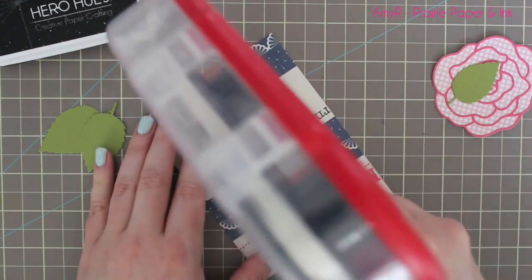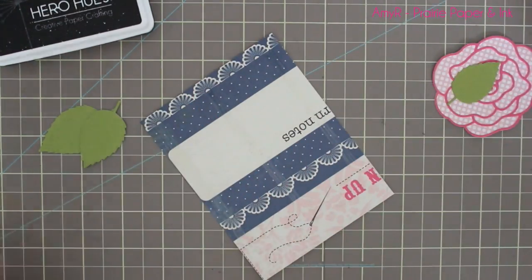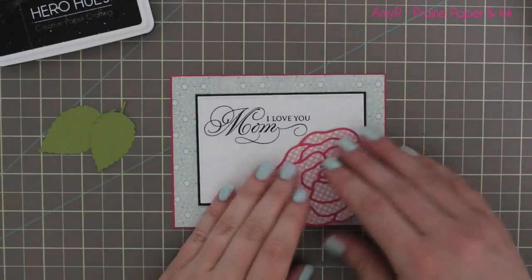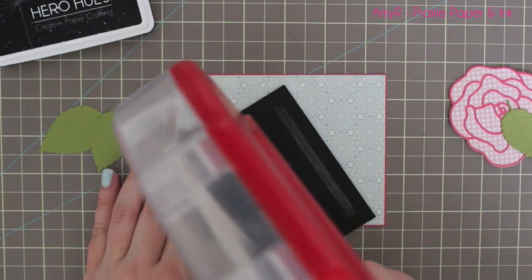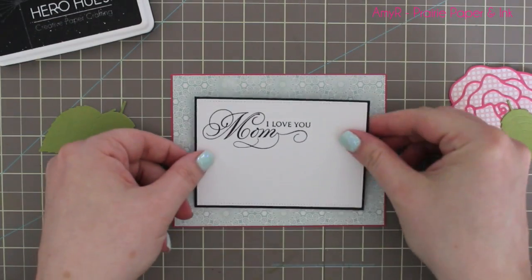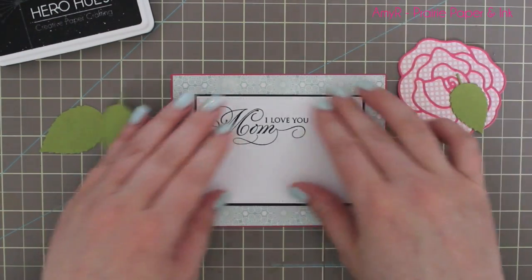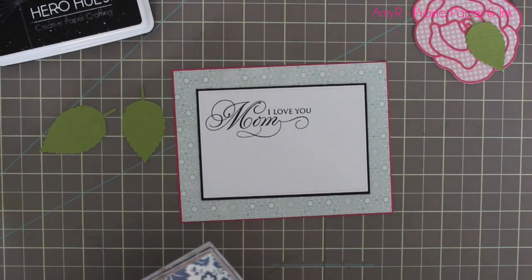I matted this piece of paper with some dark pink cardstock I had in my stash—some old Stampin' Up cardstock that really matched well with the dark pink of the patterned paper. Once everything's nice and matted and all adhered, I decided I didn't like how much white space there was on the bottom here.